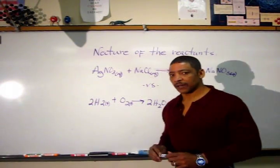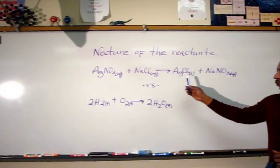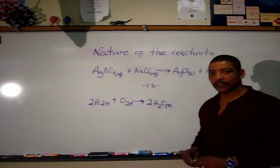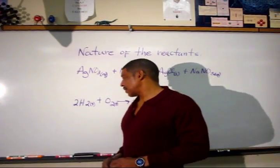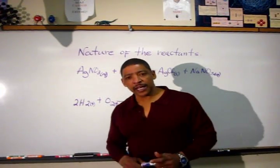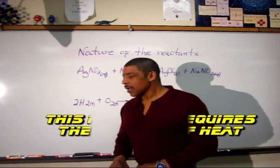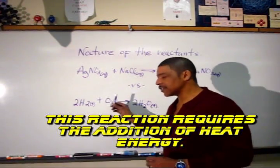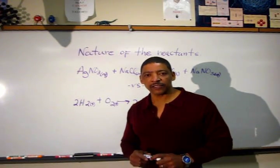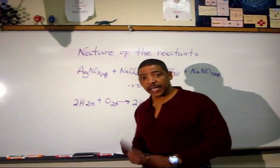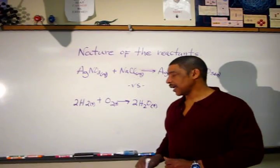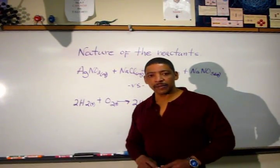In this case, the product will be a precipitate — silver chloride — and of course, aqueous sodium nitrate. In the next example, hydrogen gas reacts with oxygen gas to produce water. This reaction should occur at a slower rate. When hydrogen gas reacts with oxygen gas, covalent bonds must be broken. This process takes time. Therefore, the reaction involving aqueous ionic compounds should occur faster than a reaction involving covalently bonded compounds.